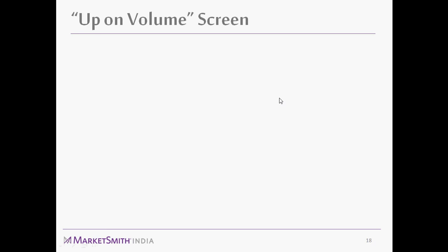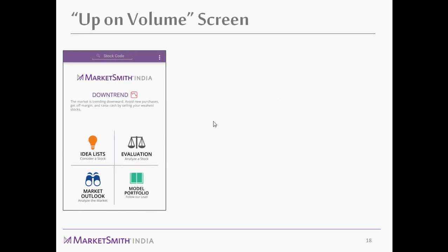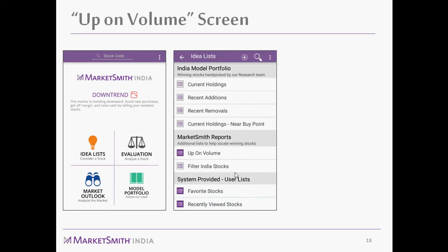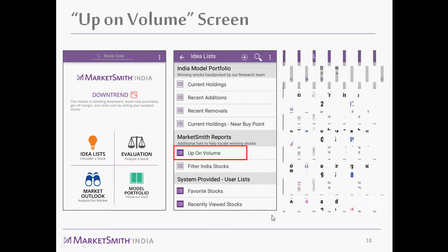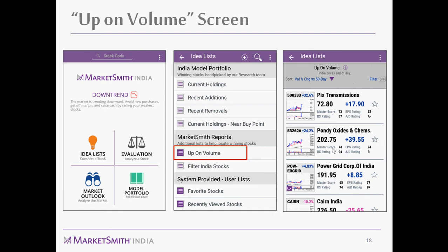Now let me tell you about our Up on the Volume screen available on the MarketSmith India app. When you open the app and click the IdeaList button, there is an 'Up on the Volume' section. This gives you stocks that are going up on above-average volumes — stocks seeing institutional buying momentum. You can sort the list by different metrics and apply filters such as viewing only mid and small cap stocks or only large cap stocks that are seeing institutional buying.